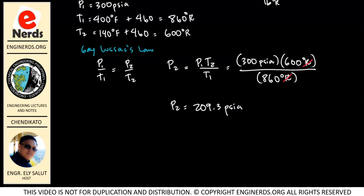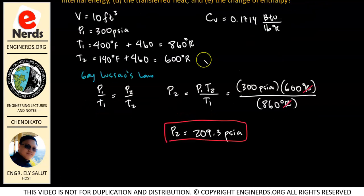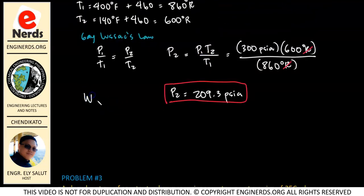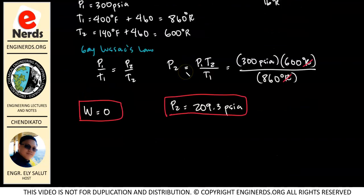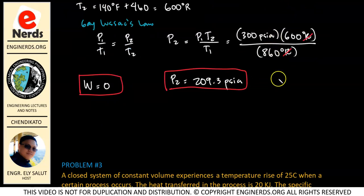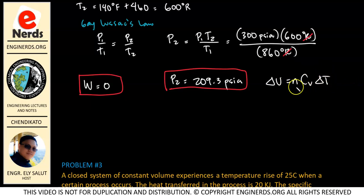The next requirement is to find the work. Since we are in a constant volume process, our work equals zero. Next is to find the change in internal energy. The formula is delta U equals N·CV·delta T, but we do not know N. We know CV and delta T, but not N, so we need to calculate N.